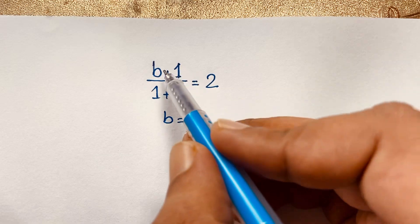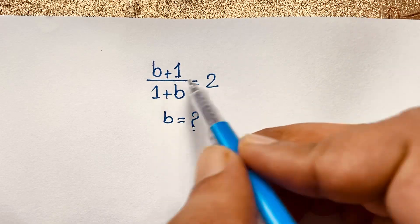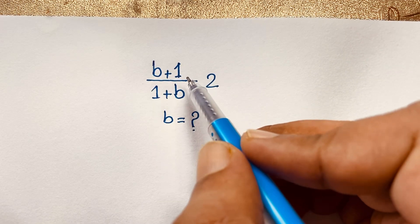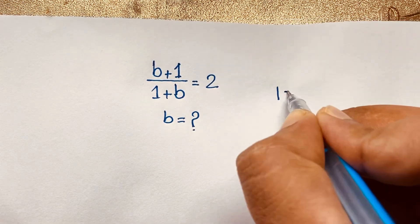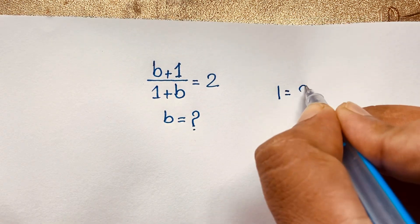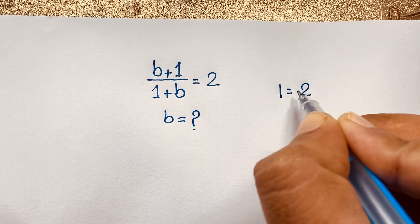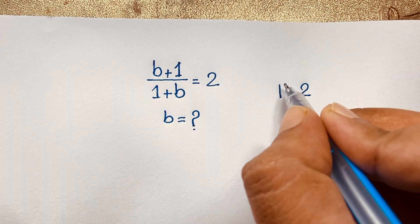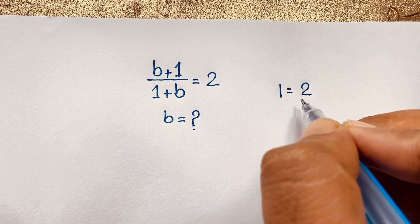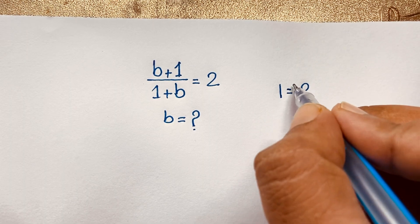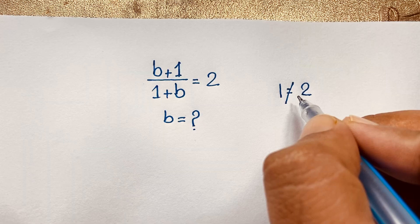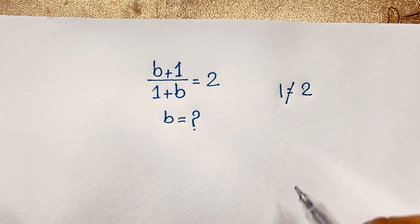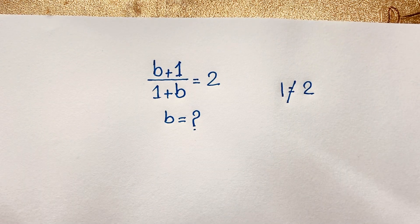So if I cancel out (b + 1) from the top and bottom, we find that 1 = 2. But the left-hand side and right-hand side are not equal, so you can't solve this question using that method. But how do we solve this interesting math question?